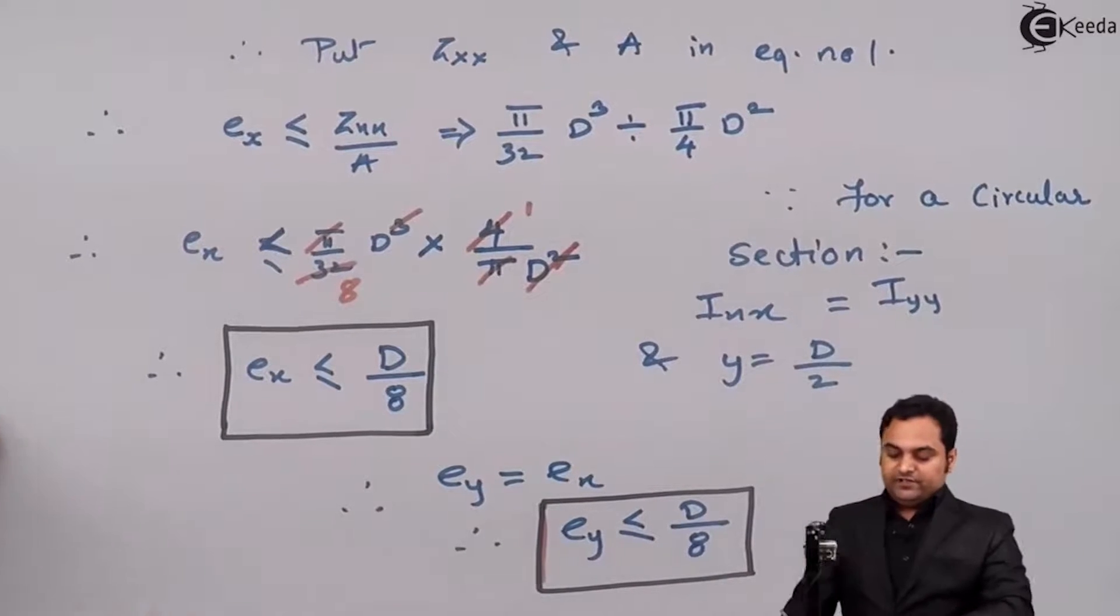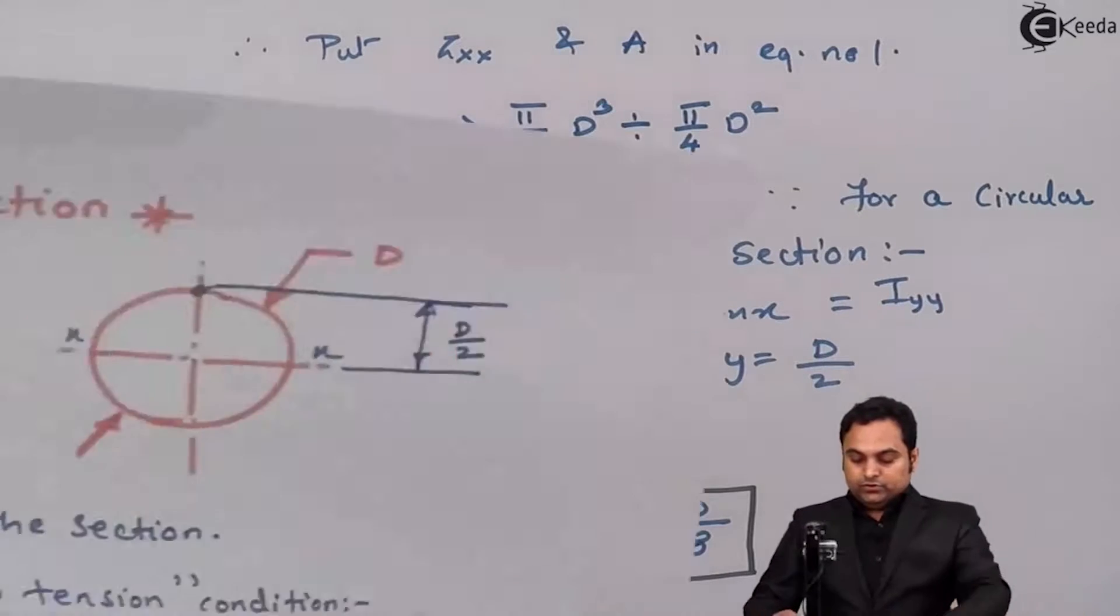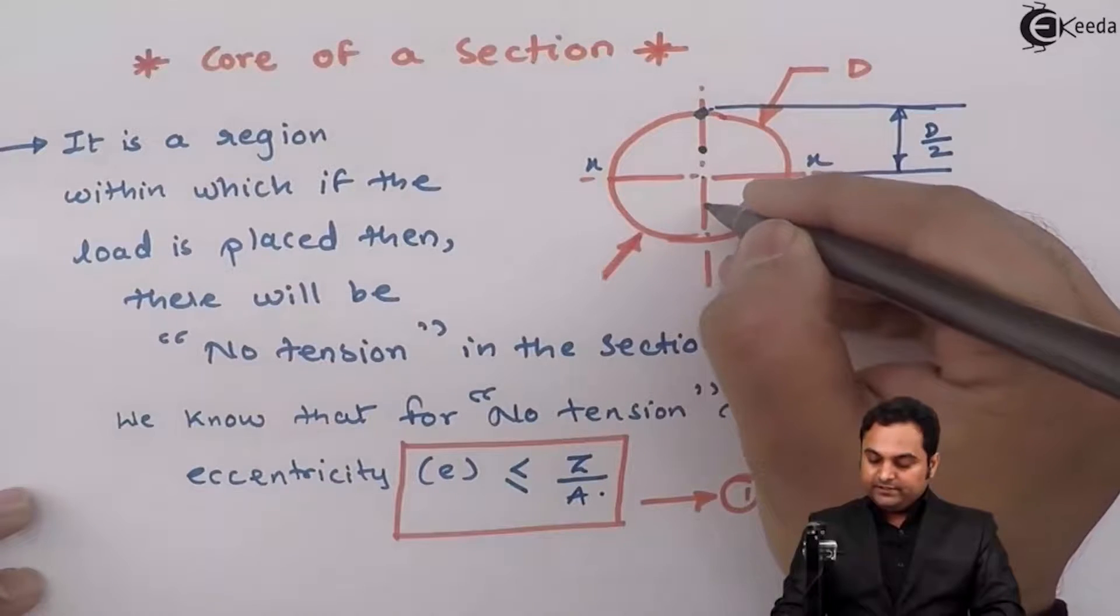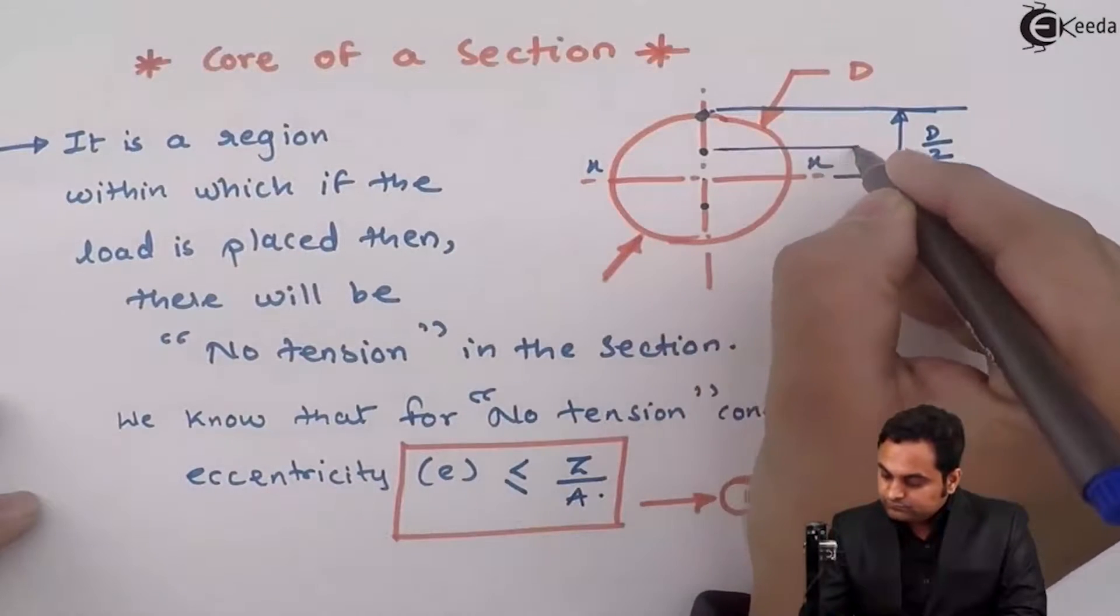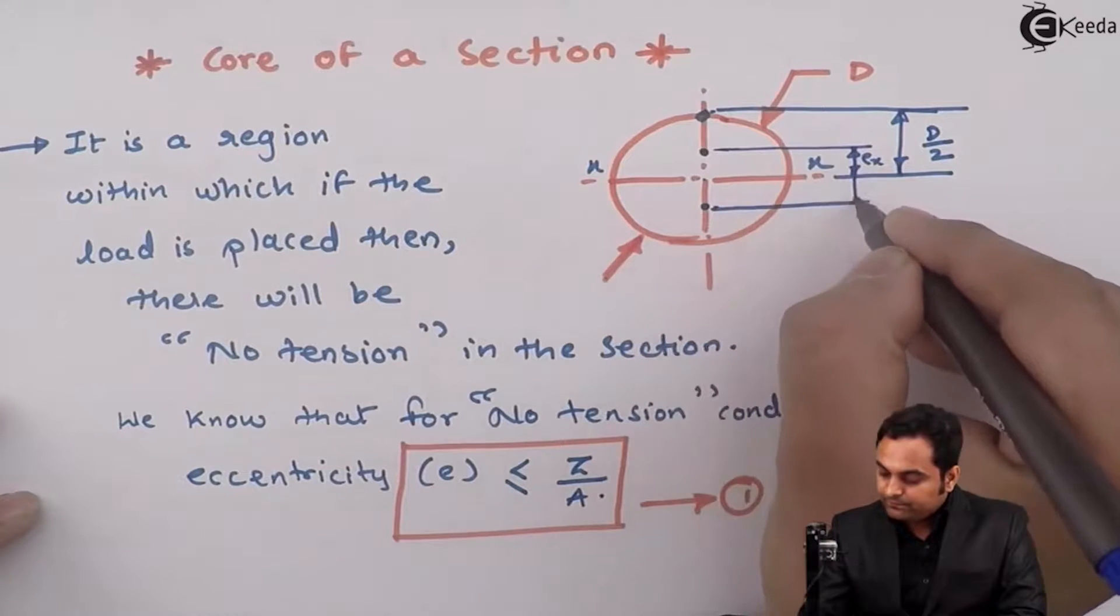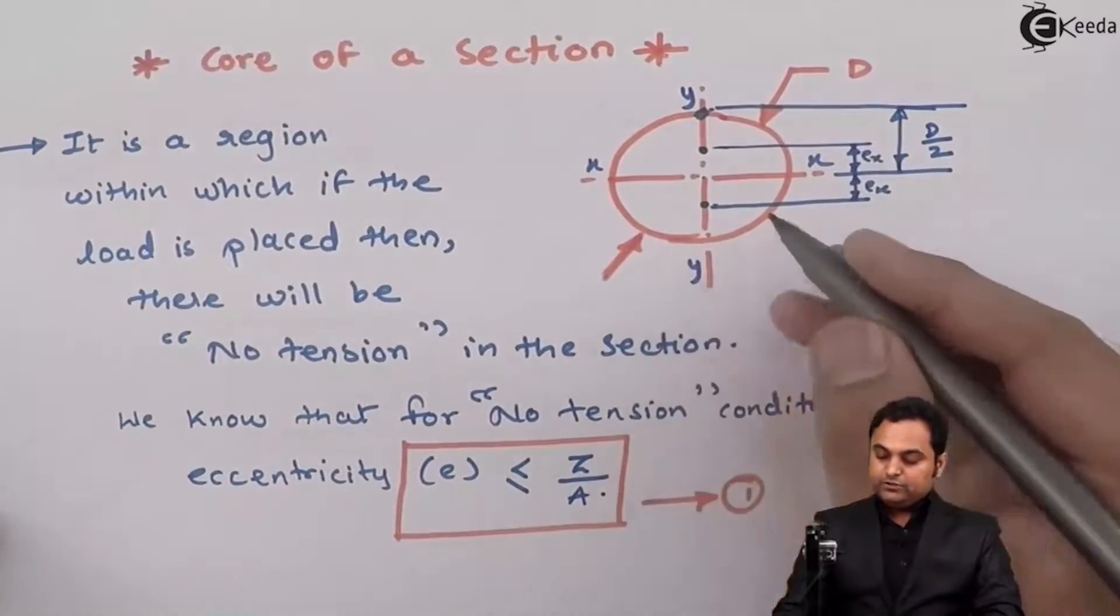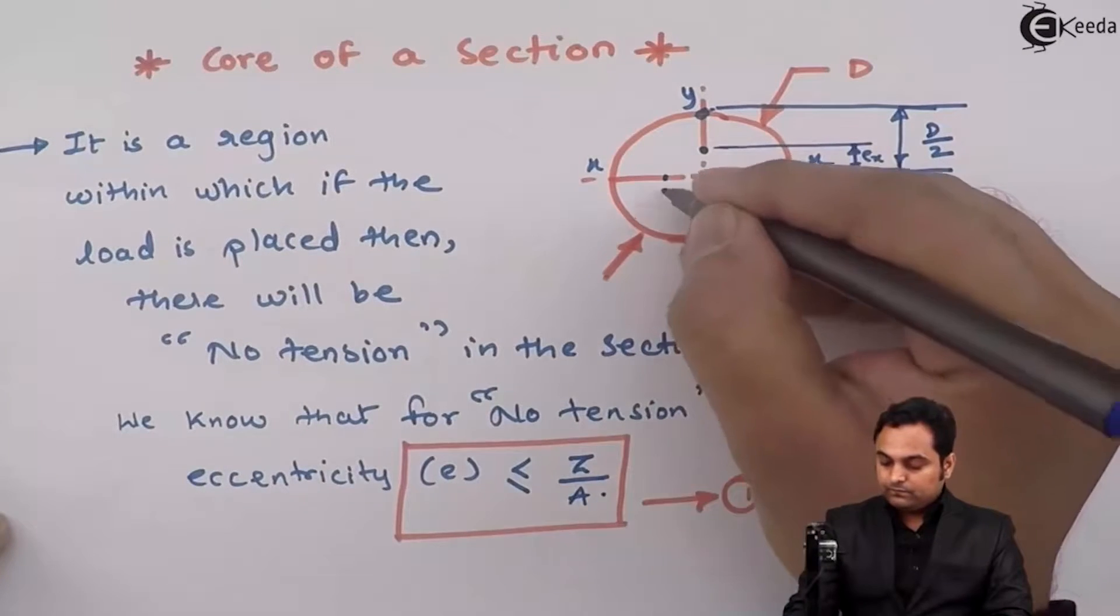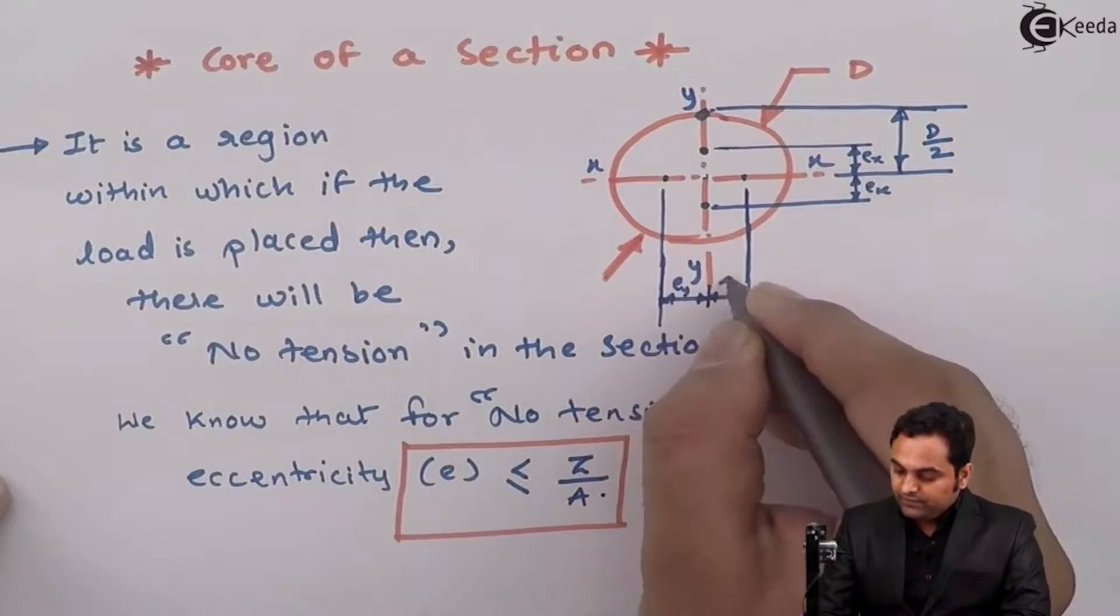After getting the values of eccentricities with respect to x as D/8, I'll take a value of D/8 on one side and D/8 on other sides. This is EX, eccentricity with respect to x. Eccentricity with respect to y-axis is also the same value, so the same distance EY and EY.